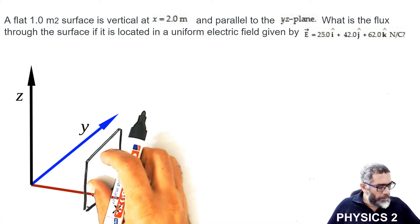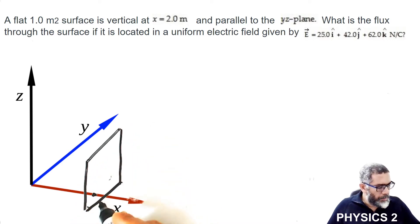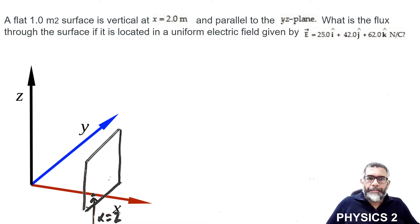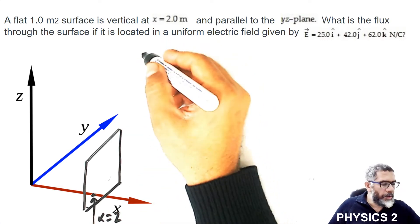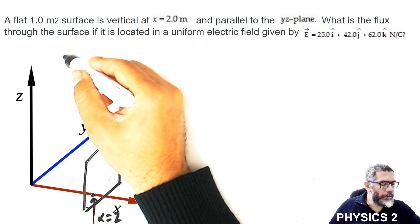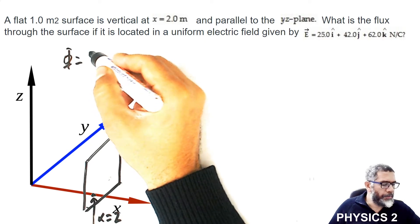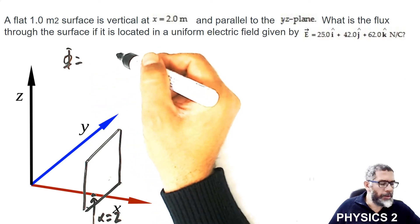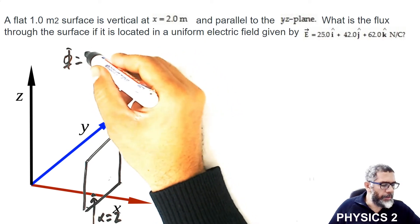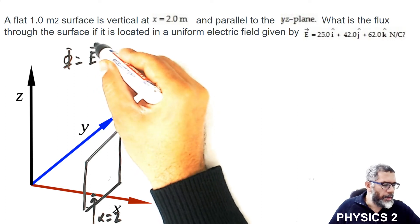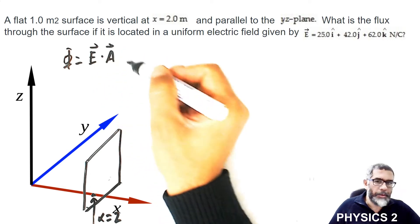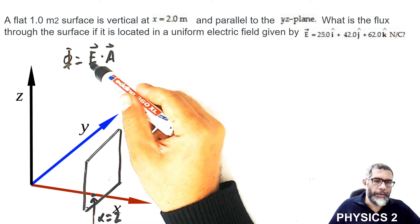So what is flux? Let me write the flux expression. For uniform electric fields and planar surfaces, this is the expression for the flux, where E is the electric field vector and A is the area vector.